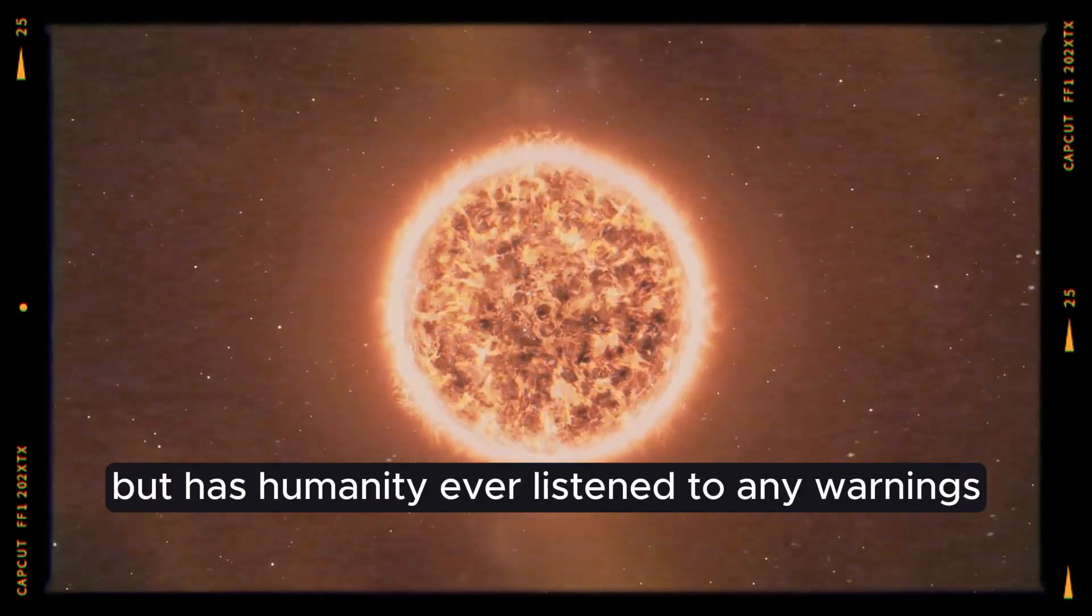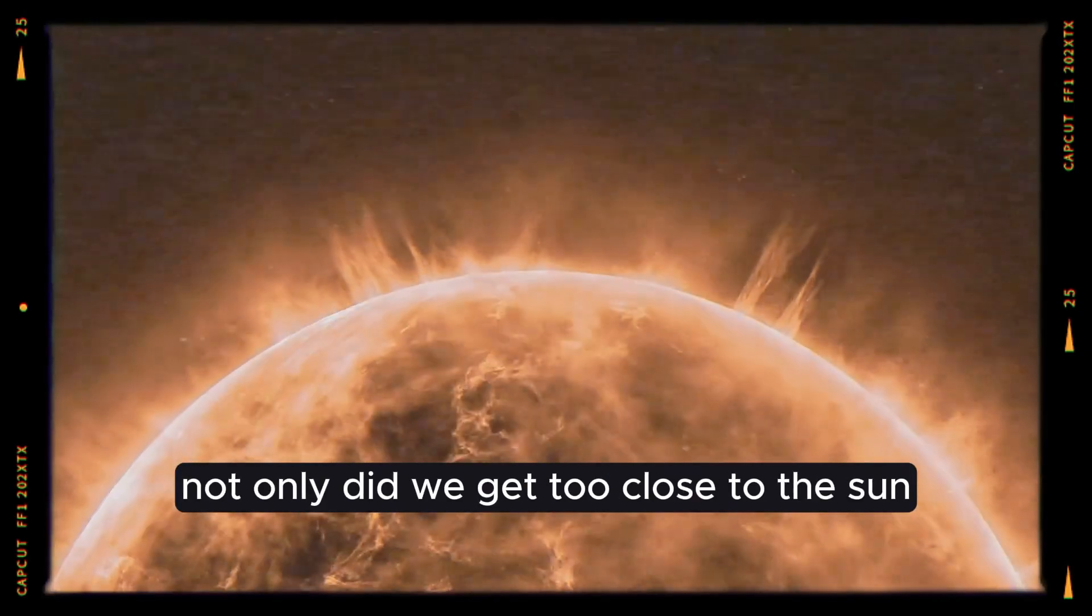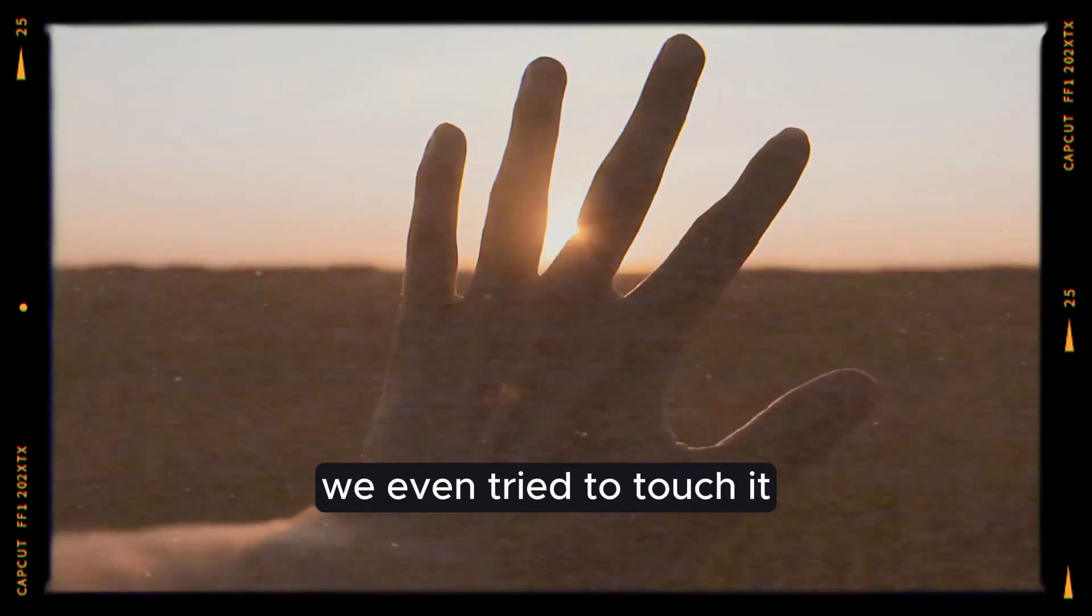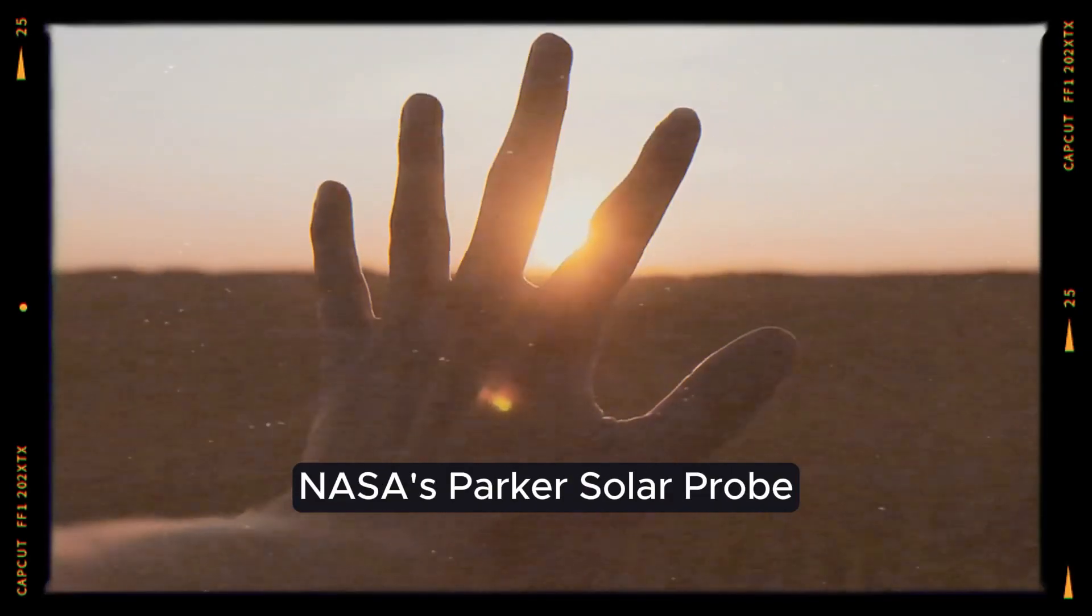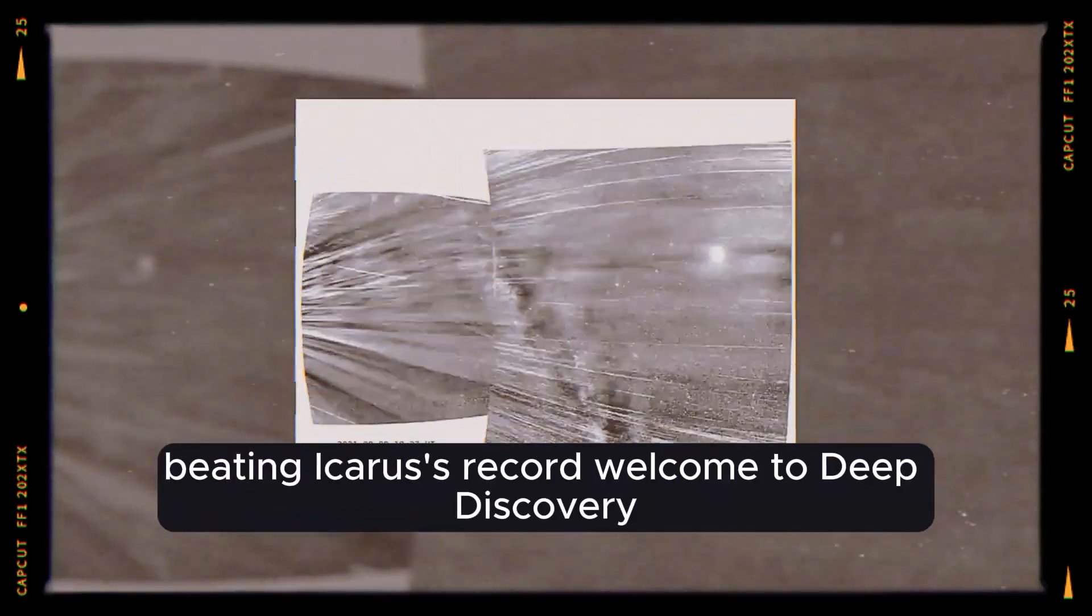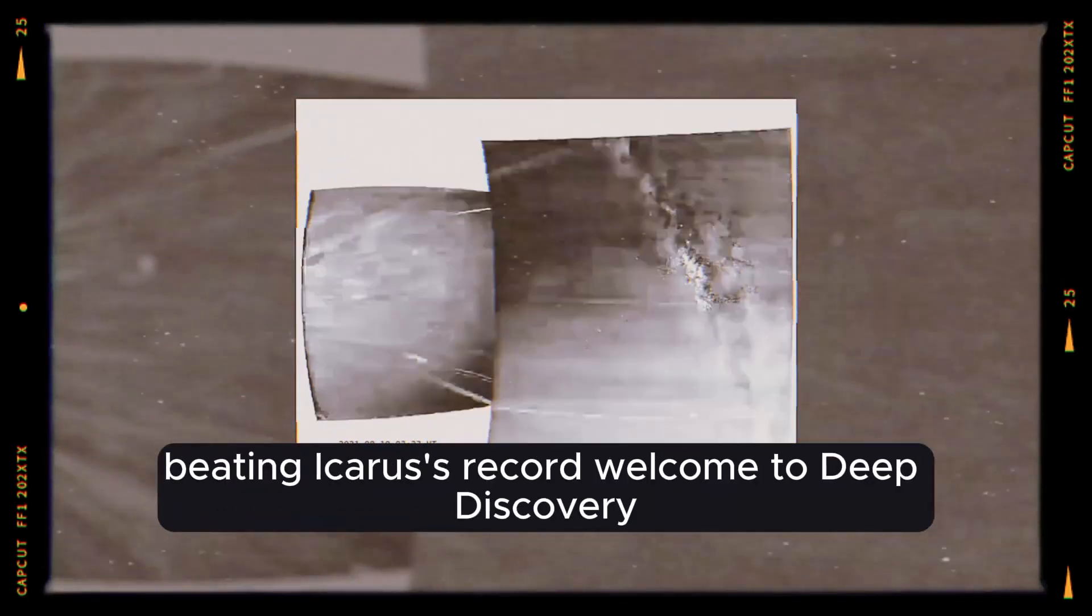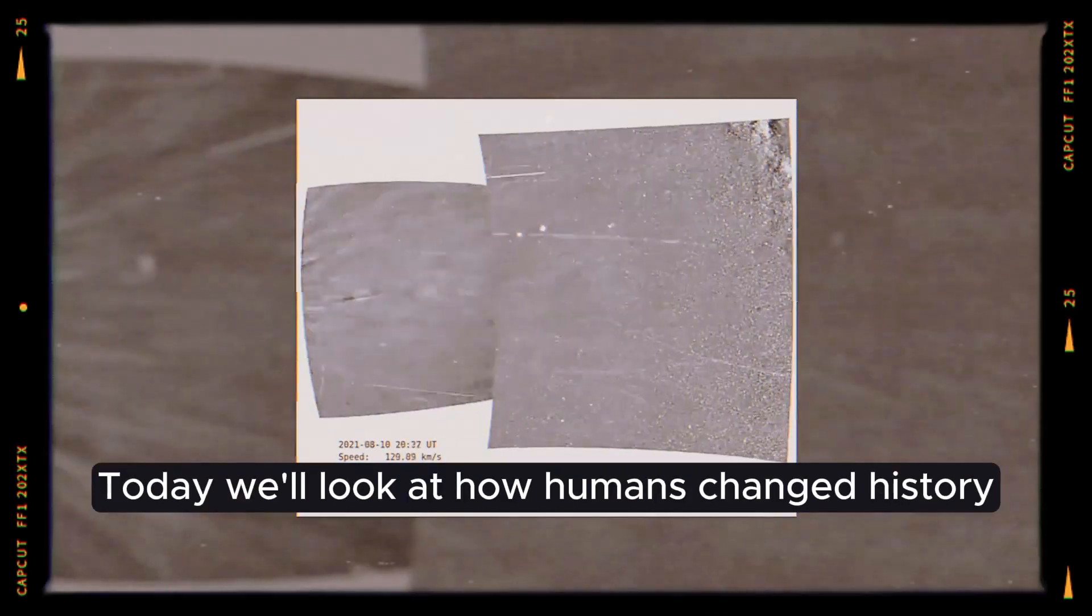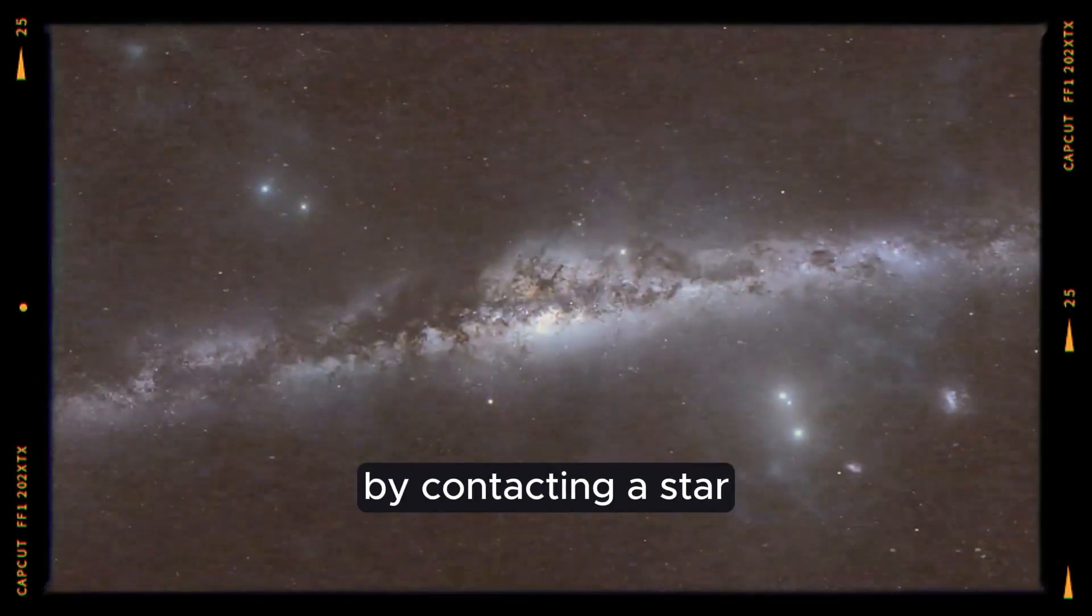But has humanity ever listened to any warnings? Not only did we get too close to the sun, we even tried to touch it. NASA's Parker Solar Probe was the first man-made object to touch the sun, beating Icarus's record. Welcome to Deep Discovery. Today, we'll look at how humans changed history by contacting a star.